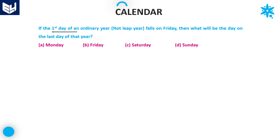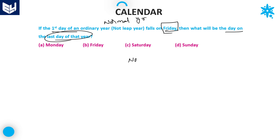Next question: if the first day of an ordinary year — ordinary year and normal year are the same, meaning it is not a leap year — falls on Friday, what will be the last day of that year? For a normal year, the first day and the last day are always the same.